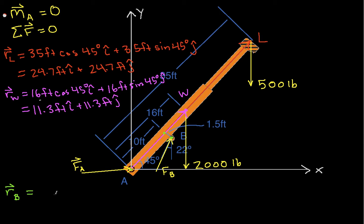So we have Rb is going to be 10 cosine 45 degrees, and that's feet, plus 1.5 cosine 45 degrees, that's also feet, and all of this times i-hat. Okay.